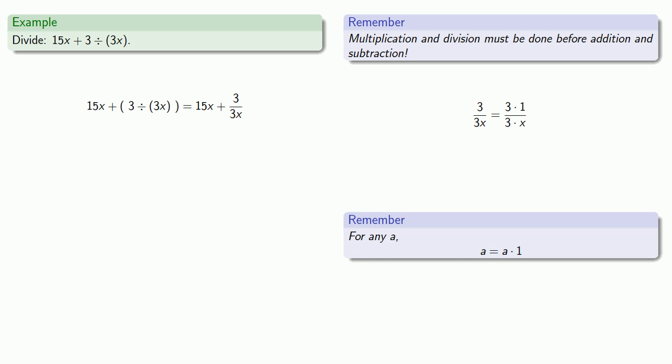So I can rewrite my numerator 3 as 3 times 1, my denominator is 3 times x. Now I can rewrite this fraction as a product: 3 over 3 times 1 over x. Now I can simplify: 3 over 3 is 1, and we don't really need to include a factor of 1, so 1 over x.